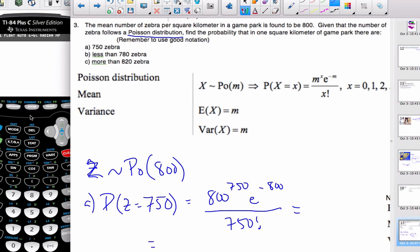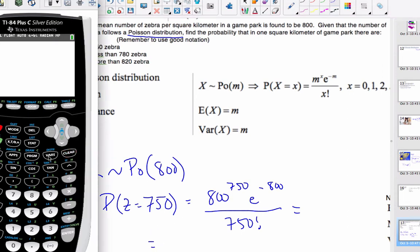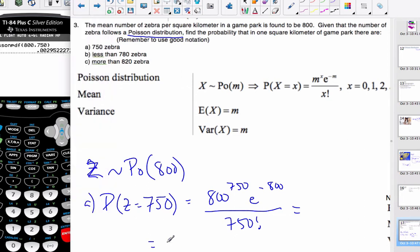But I could go to my calculator. Go to distributions, Poisson PDF. My parameter is 800, and I'm looking for 750 exactly. The probability of this happening is 0.00295 to three significant figures.